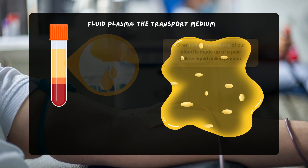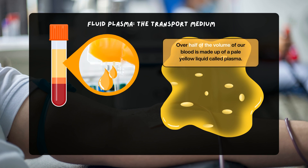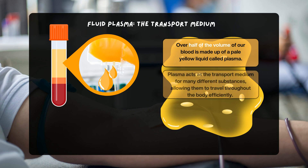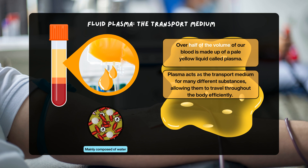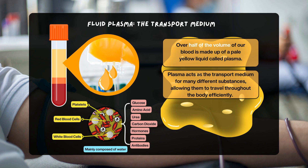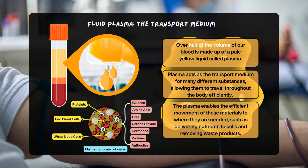Over half of the volume of our blood is made up of a pale yellow liquid called plasma. Plasma acts as a transport medium for many different substances, allowing them to travel throughout the body efficiently. It is mainly composed of water, which carries red blood cells, white blood cells, platelets and dissolved substances including glucose, amino acids, urea, carbon dioxide, hormones, proteins and antibodies. The plasma enables the efficient movement of these materials to where they are needed, such as delivering nutrients to cells and removing waste products.